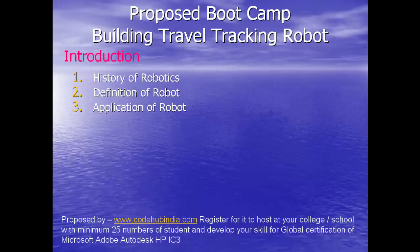Robot Definition: A robot is a mechanical device that can perform a given task depending on the instructions it is given. Unlike a computer or machine, a robot not only performs the task given to it, but is also able to use artificial intelligence (AI) and learn from its experiences while performing tasks.